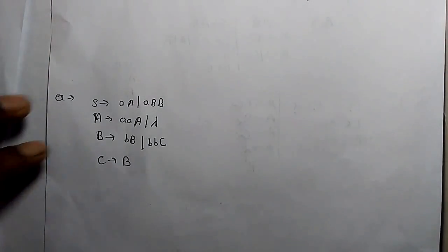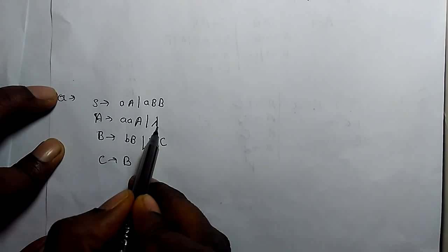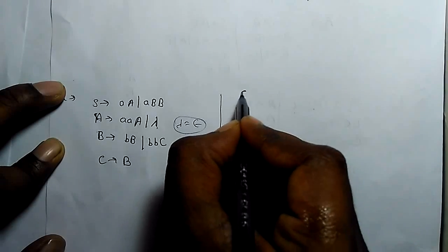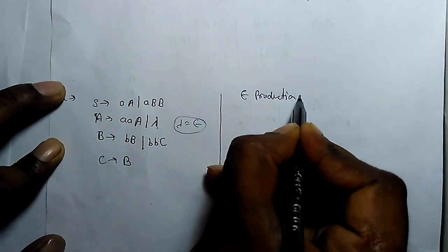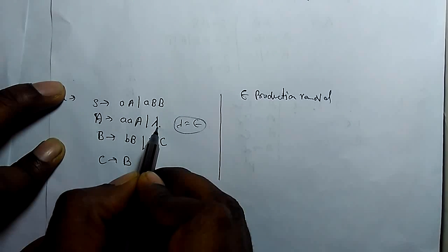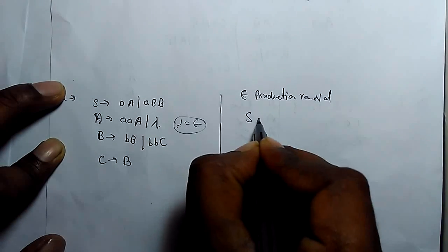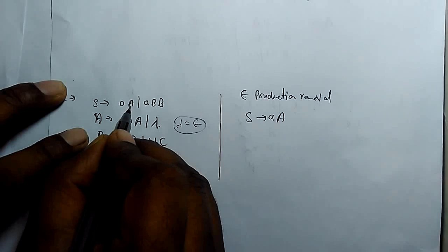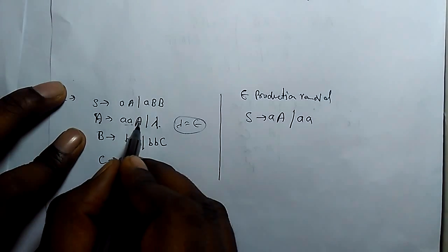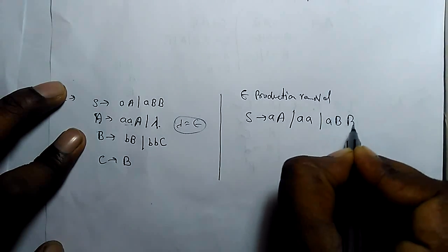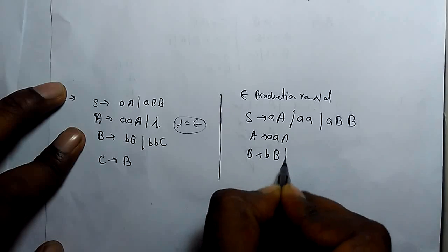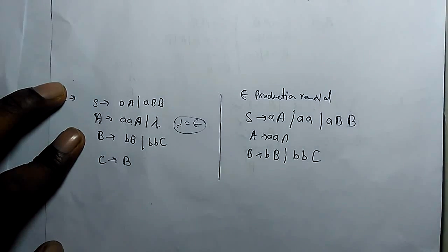In this question the null production is A derives lambda, where lambda equals epsilon. After null production removal: A derives lambda — here we have only one variable A that derives lambda. So for removing it we write S derives AA and S derives A (replacing one A with lambda), keeping A derives AA as is, and B derives small b capital B, B, b, and capital C. This gives us the grammar after null production removal.